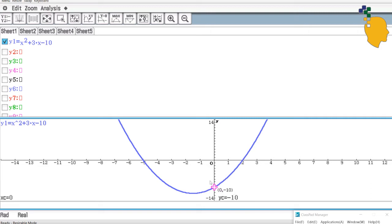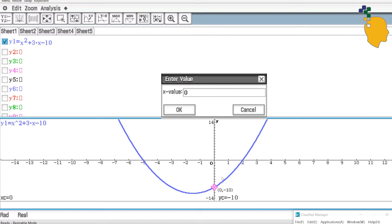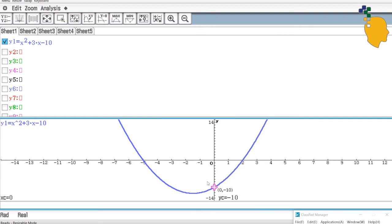When you click onto trace, if your point is not on the y-intercept, all you have to do is just type 0 and the value will pop out. Then click OK and you'll move to the point when x is 0.